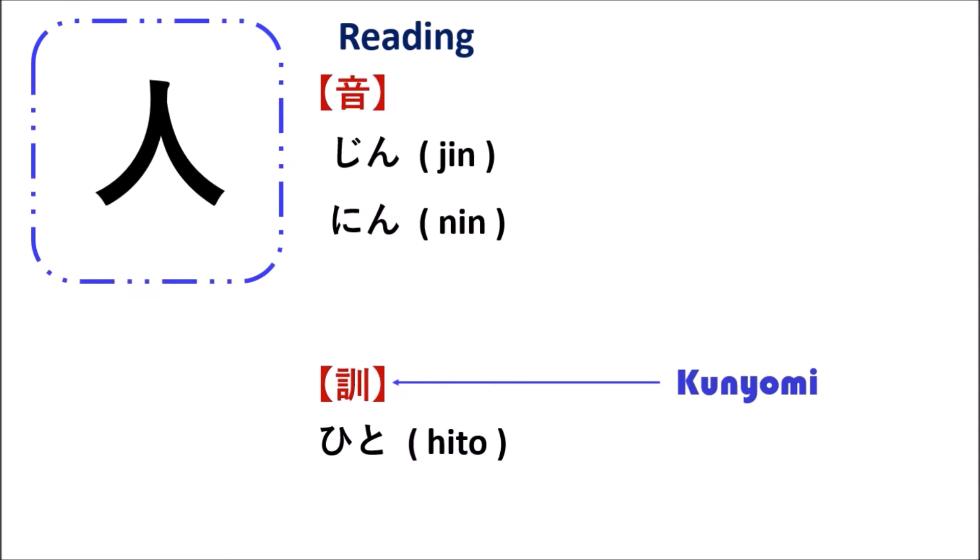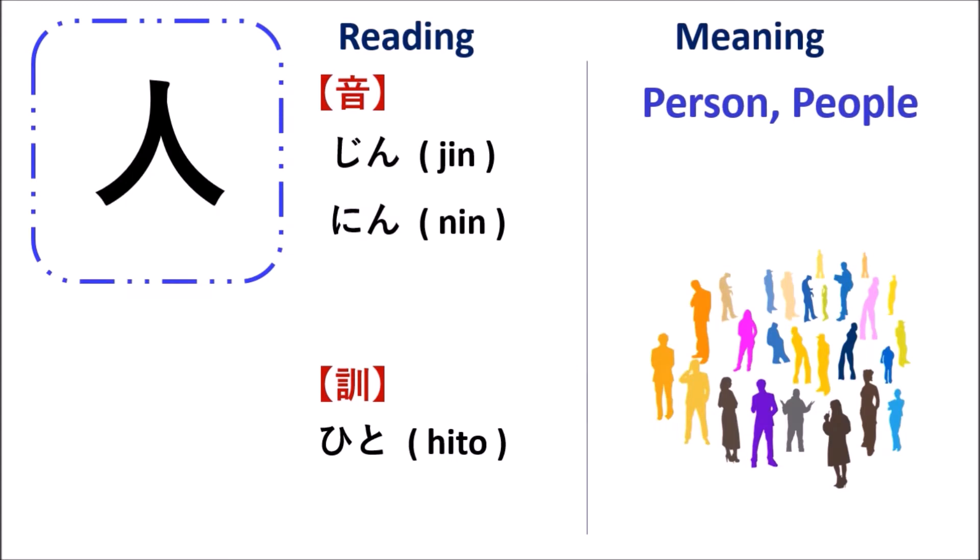Every time you learn a Japanese kanji, you have to remember both the reading and the meaning — it's very important. If you don't know the kun'yomi and on'yomi readings, Japanese kanji will be very difficult for you, so please remember. One more important thing is the meaning of the kanji. This kanji has the meaning of 'people' or 'person.' Even if you don't know how to read the kanji, if you know the meaning, you can still understand the word.